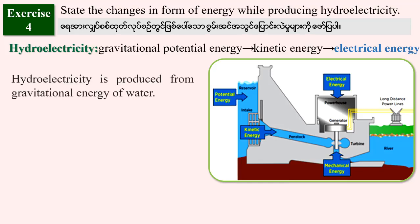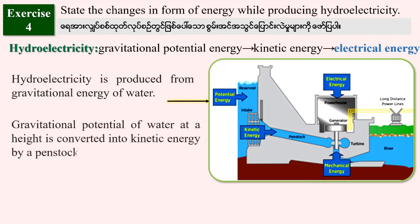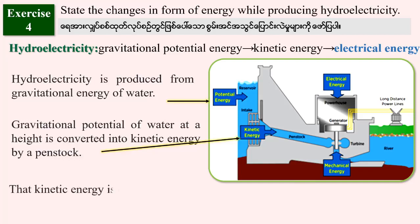Hydroelectricity is produced from the gravitational potential energy of water. The gravitational potential energy of water at a height is converted into kinetic energy via the penstock. That kinetic energy is then converted into mechanical energy using turbines.